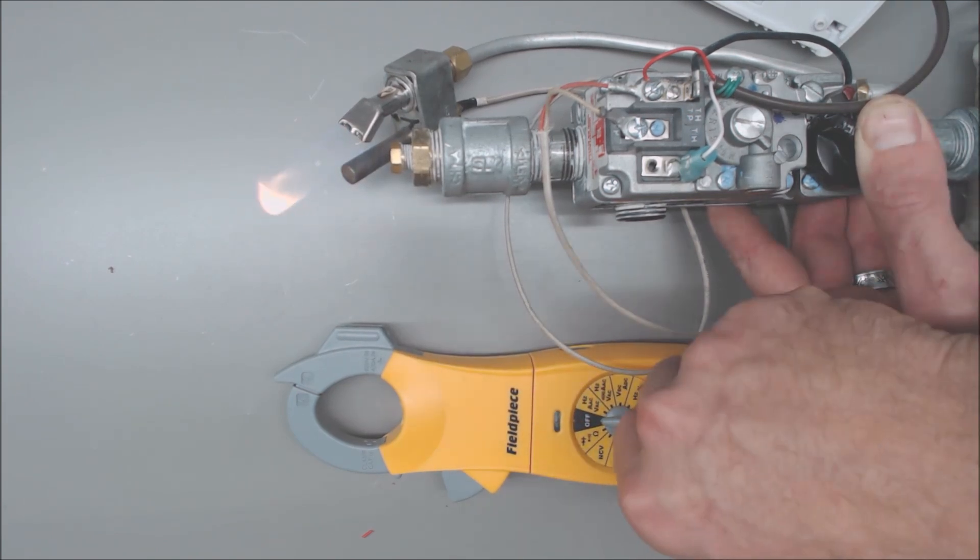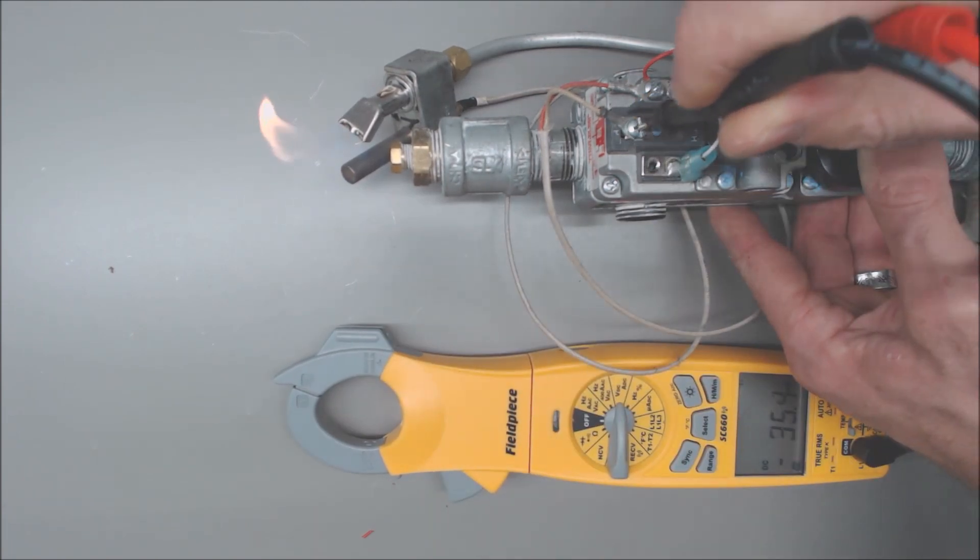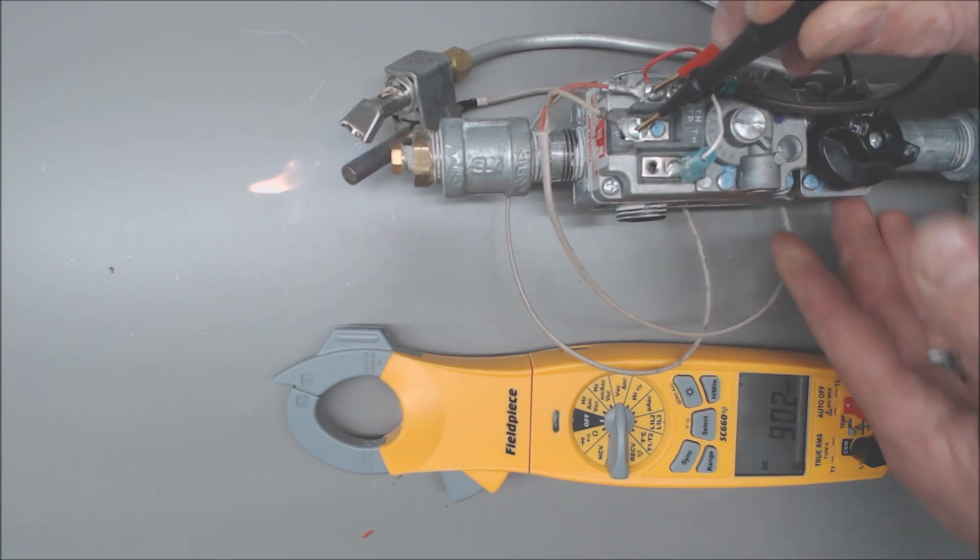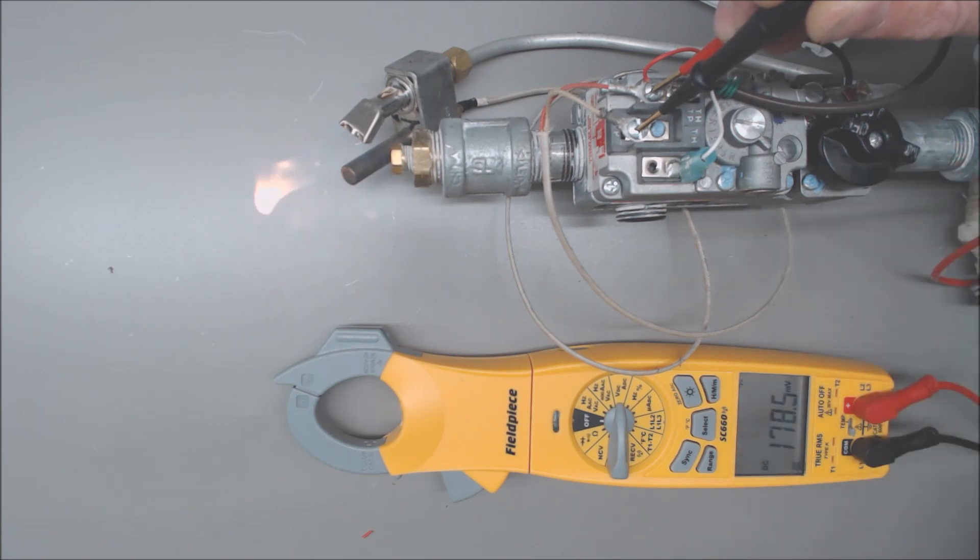We're going to take a DC millivolt reading right on our connections here, and you see that we're reading above 60 millivolts. That means that pilot valve is actually stuck open right now. See, I no longer have to press this down.